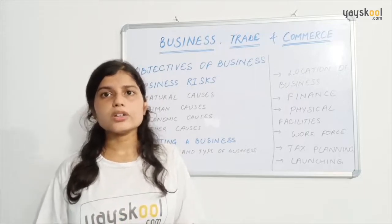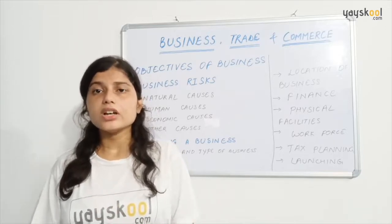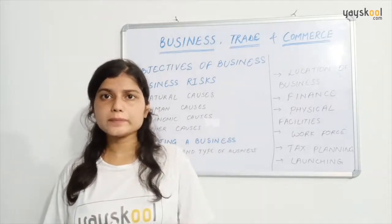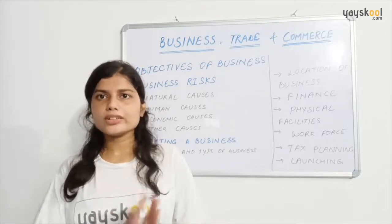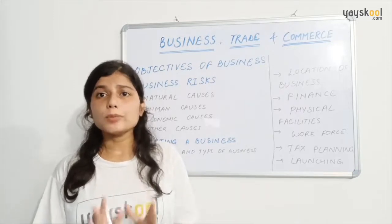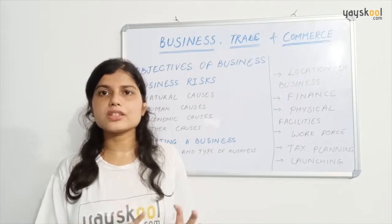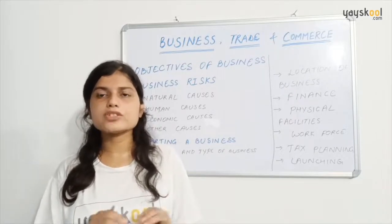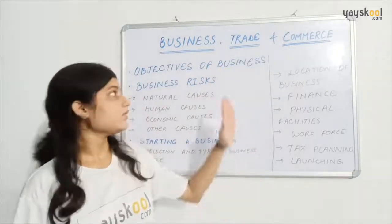Social objectives include providing quality goods at reasonable prices, focusing on the welfare of employees, and promoting employment generation. Paying government dues and all government taxes are also part of social objectives. Human objectives include promoting labor welfare. Optimum utilization of resources is also a very important objective — whatever resources the business uses must be used to their best and must not be wasted.